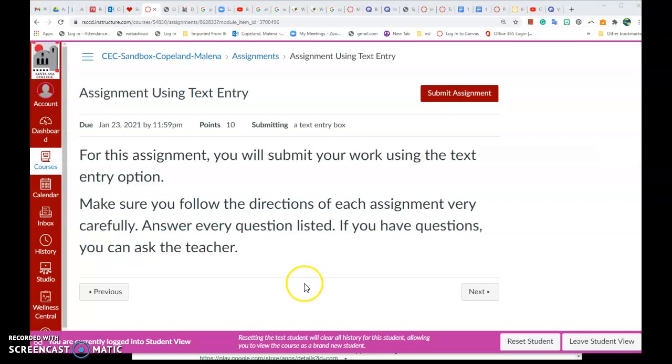All you need to do is when you're looking at your assignment, you're going to click where it says Submit Assignment. Now if you look at the assignment, you'll see a due date, how many points it's worth, and how you can submit your assignment. In this case it says a text entry box.